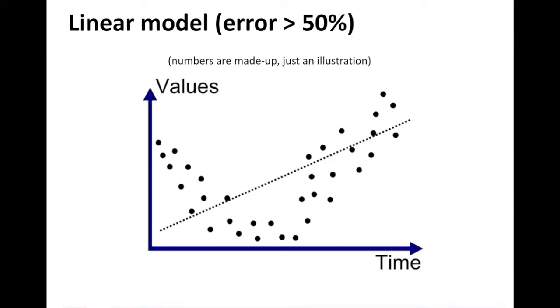As you can see the line and the data points are not really aligned. It's not really capturing the pattern that exists in the data. It's going through maybe like one, two to three points and the error is greater than 50 percent. So this is the simplest model that we are first considering.